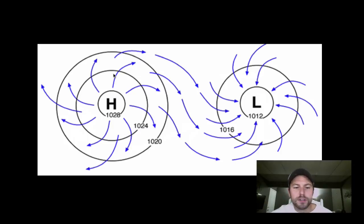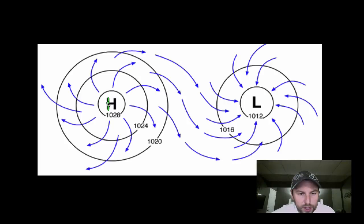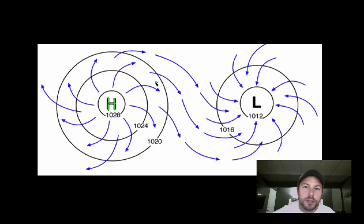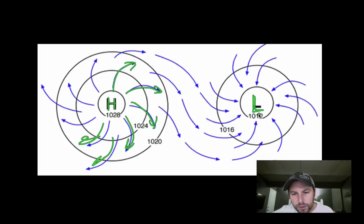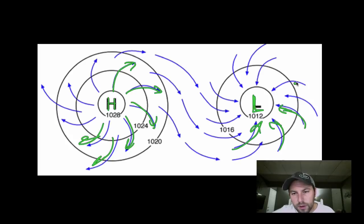Here's a map looking from the top. Notice we also have our isobars on this map. High pressure right here in the middle: 1028, 1024, 1020 — those are isobars, never touching, running parallel to each other. Notice, out in a clockwise motion. Low pressure over here on the right-hand side — isobars around it: 1012, 1016. Notice, inwards, counterclockwise around that.